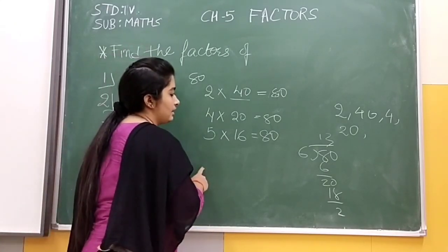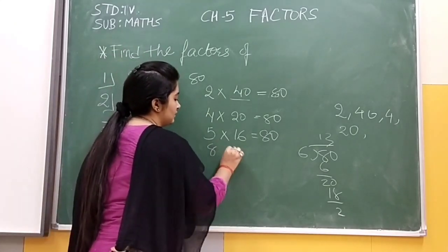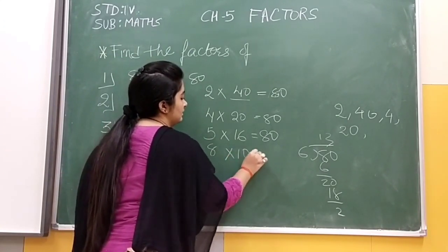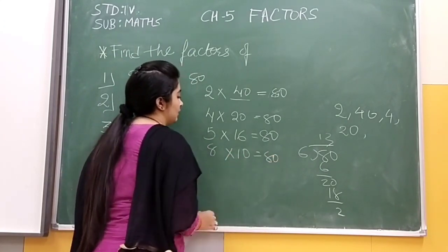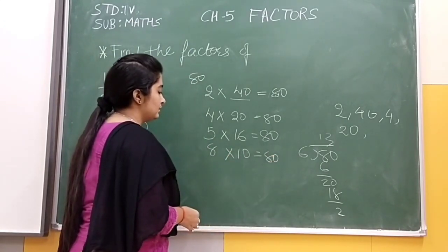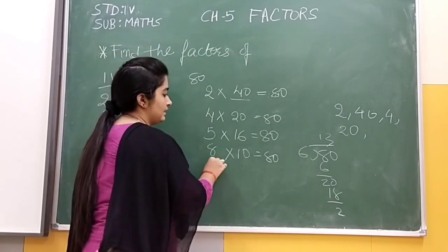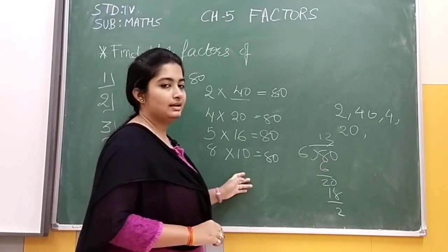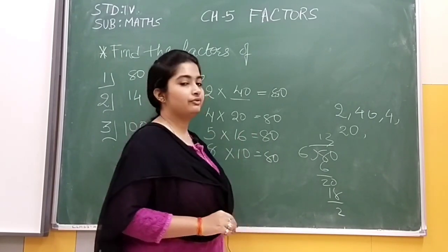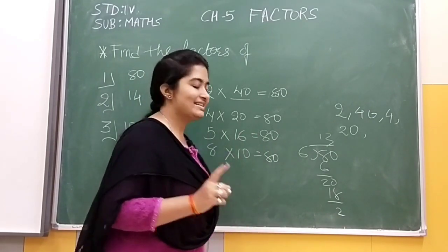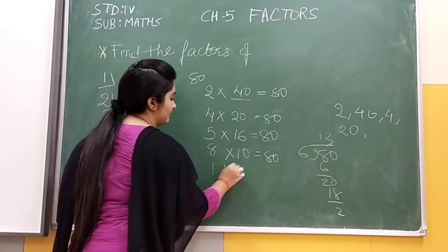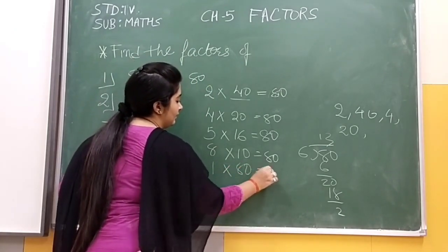Then 7 also we can't take. Can we take 8? Yes, 8 into 10 is 80. Now 9 we can't take. 10 we have already taken. One more remains: 1 into 80 is 80, which comes in all numbers.